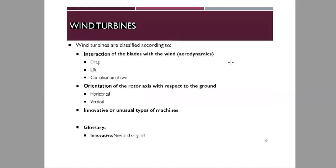Wind turbines are classified according to three different classifications. The first is the interaction of the blades with the wind, usually referred to as aerodynamics. I'm going to explain what drag means, what lift means, and how a combination of the two applies to the interaction of blades with the wind.